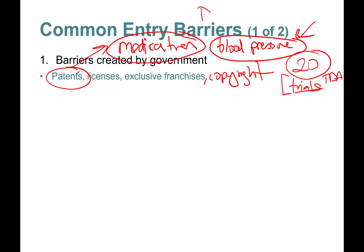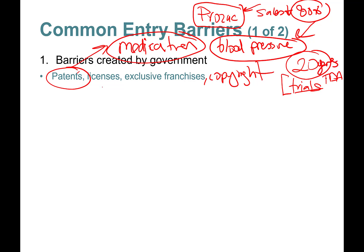That's why, for instance, Prozac — a medication for mood disorders — saw its sales go down by 80 percent once its patents expired. For that 20-year patent period, you essentially become a monopolist.